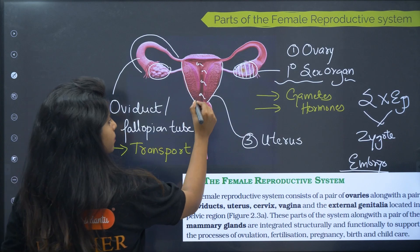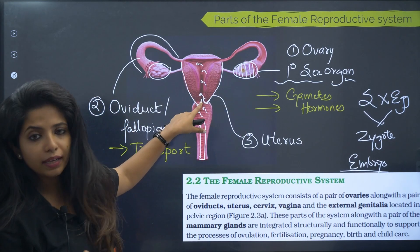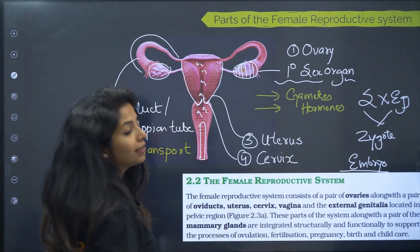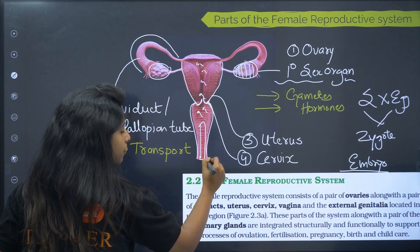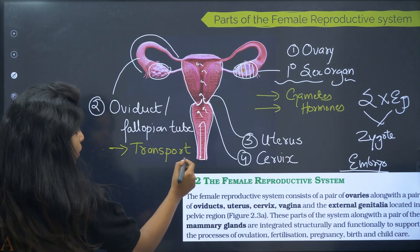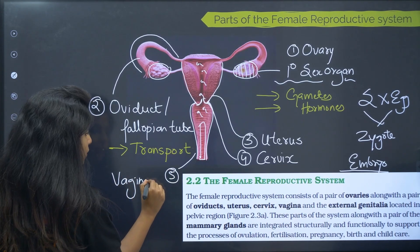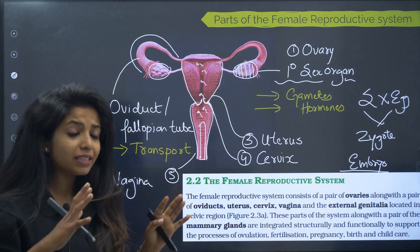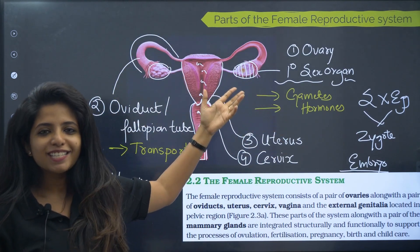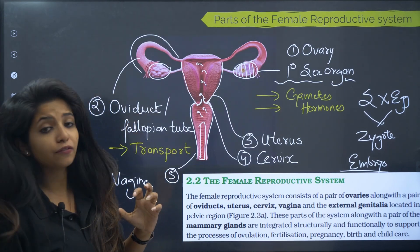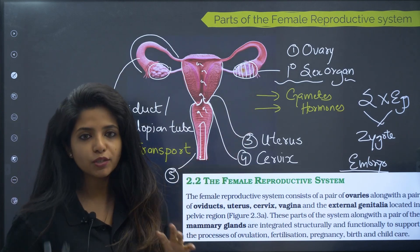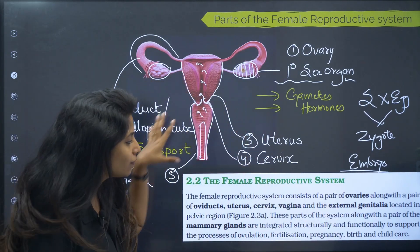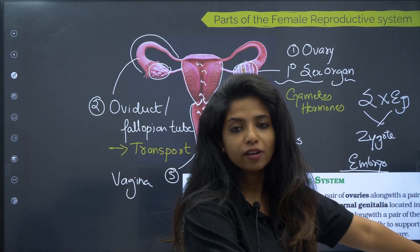At the end of the uterus there is a flap called the cervix. Beyond that is the vagina — the fifth structure. The ovary is the primary sex organ; the oviduct, uterus, cervix, and vagina are secondary sex organs. Apart from these reproductive organs, females also have a pair of mammary glands, which are used for child care and breastfeeding.